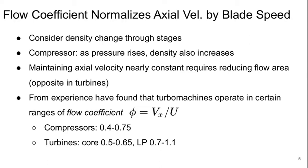We also introduced the flow coefficient, which is a normalization of the axial velocity by our blade speed. We use the symbol φ for this. In compressors this tends to be in the range of 0.4 to 0.75. In turbines, for core turbines, 0.5 to 0.65, and for low pressure turbines, 0.7 to 1.1.